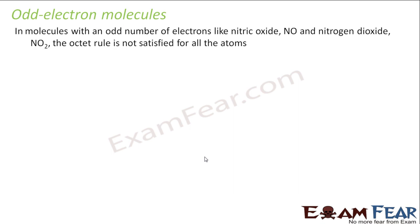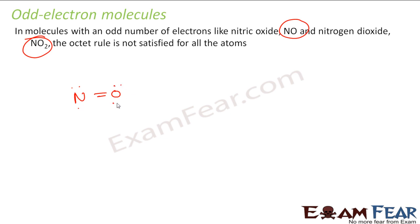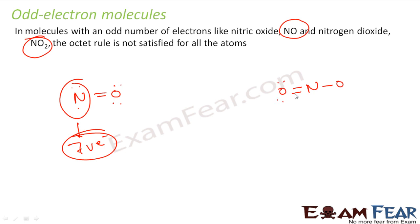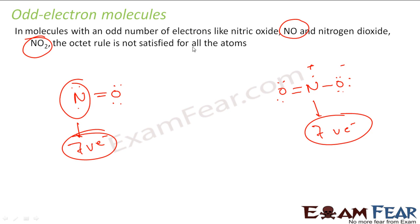There are also cases of odd electron molecules where the octet is not satisfied. For example, in NO and NO2, the octet rule is not satisfied. If you draw the Lewis structure for NO, nitrogen has 7 valence electrons. Similarly for NO2, nitrogen has 7 valence electrons — it doesn't satisfy the octet. When the number of electrons is odd, the central atom cannot achieve a complete octet of 8 electrons.